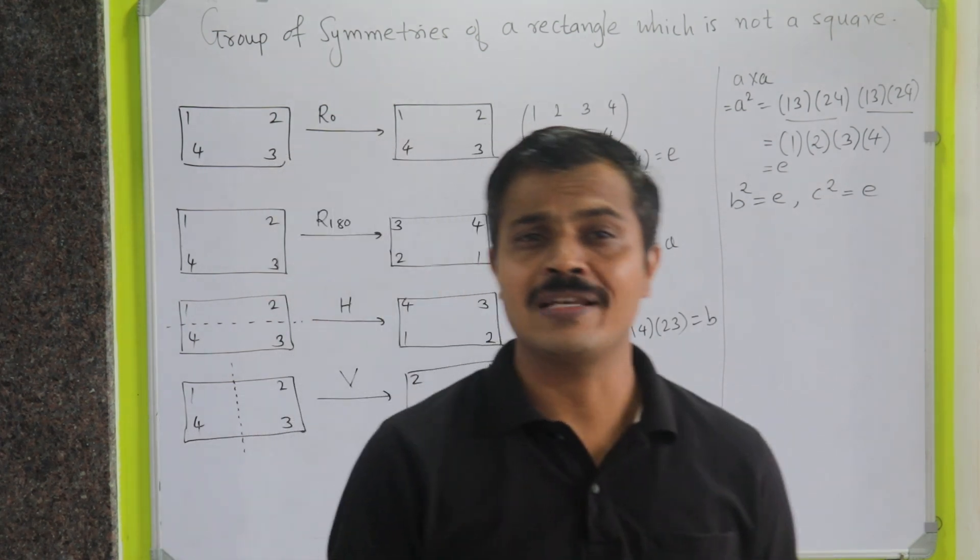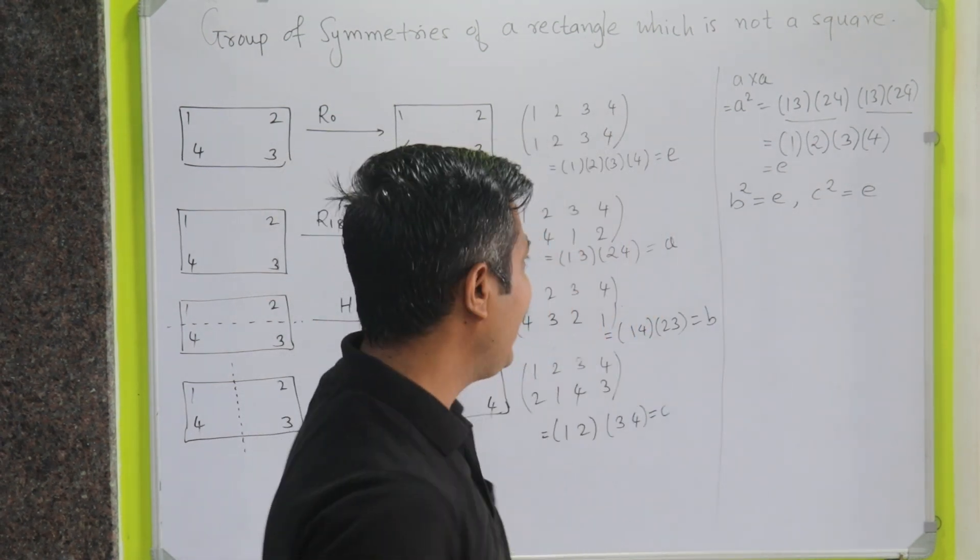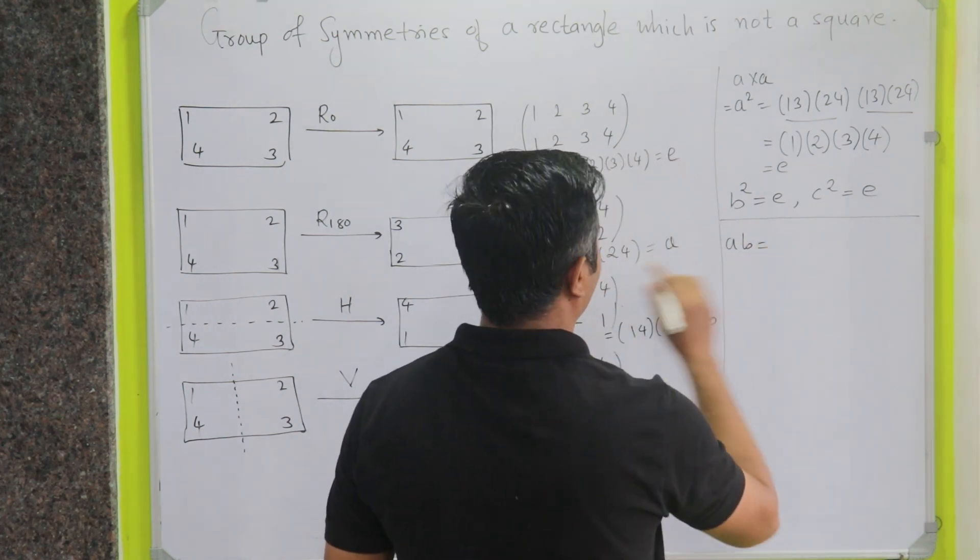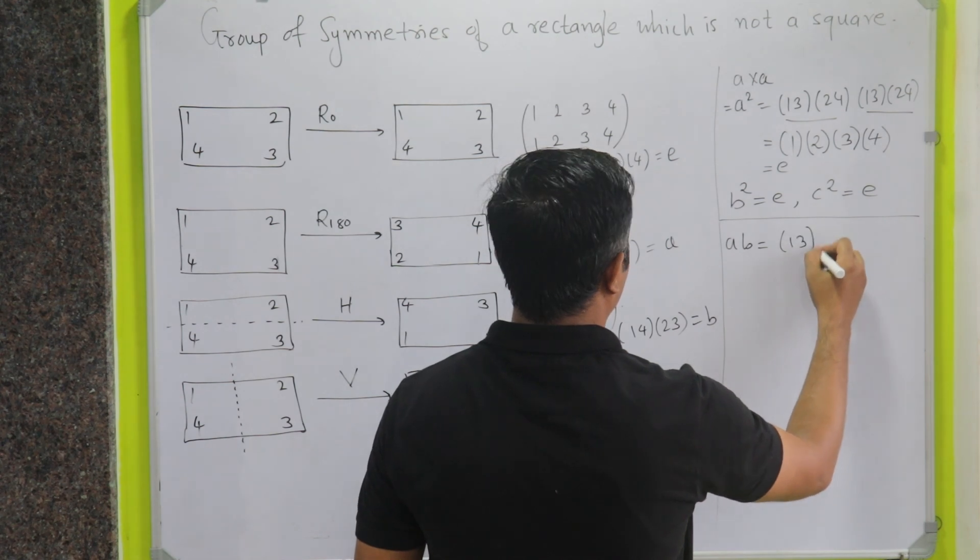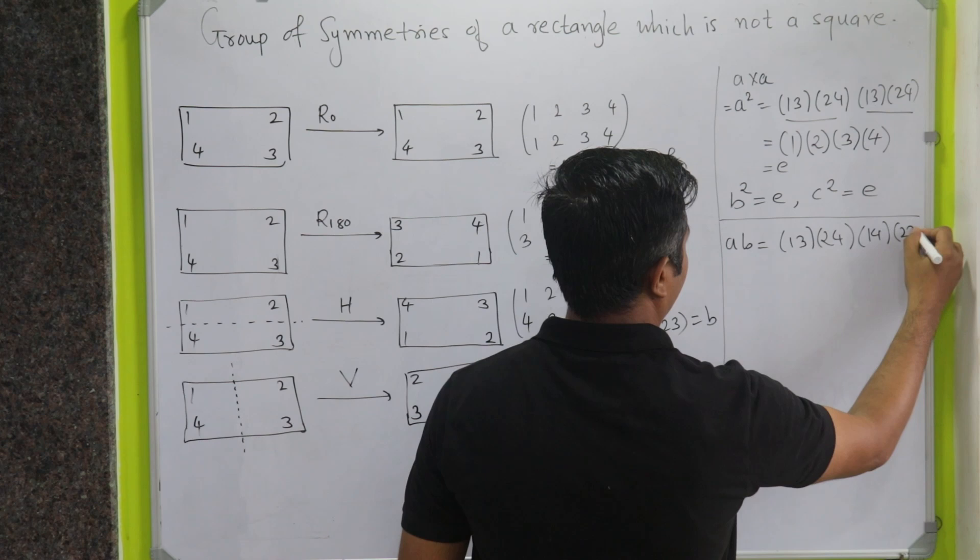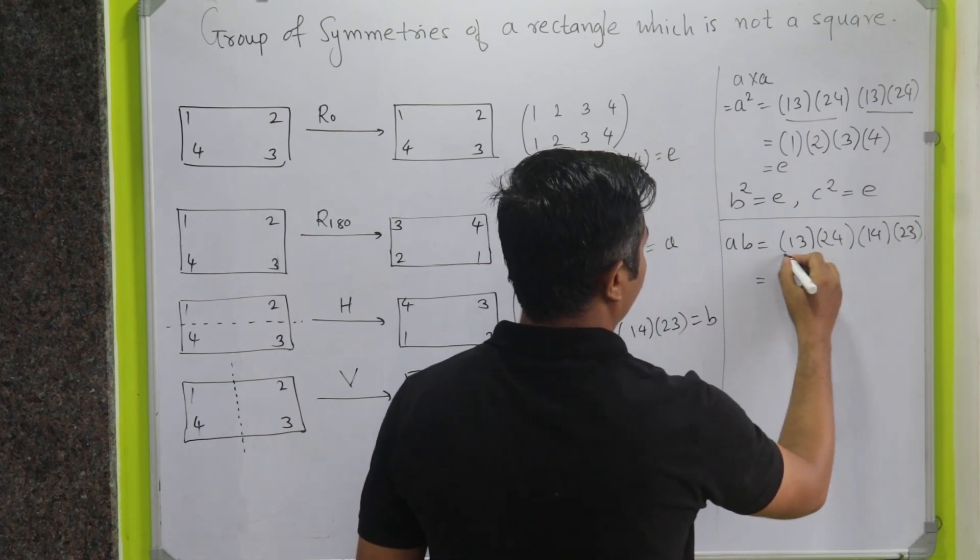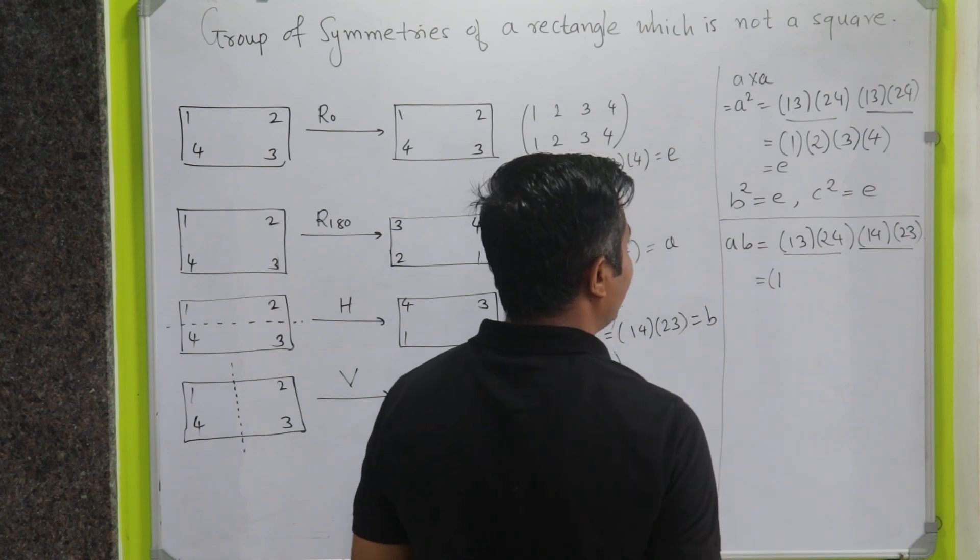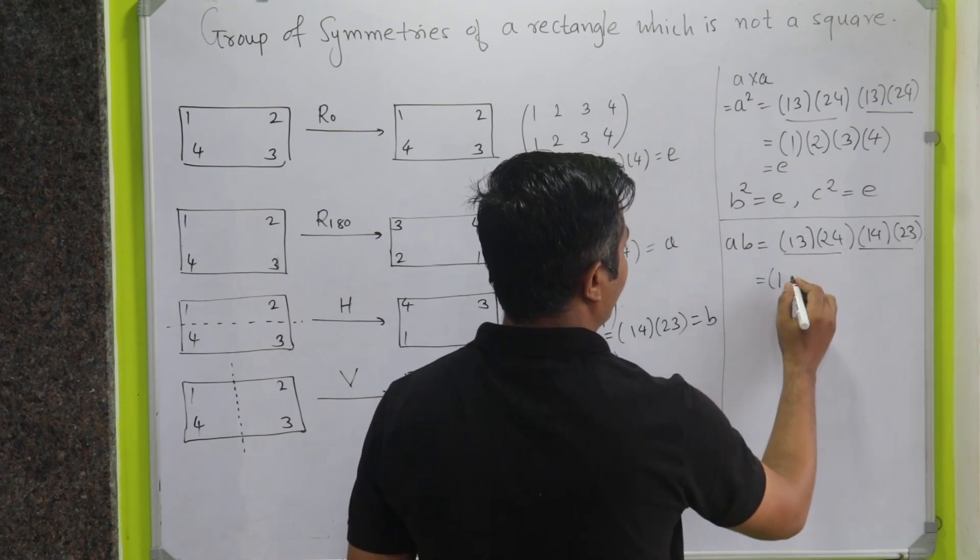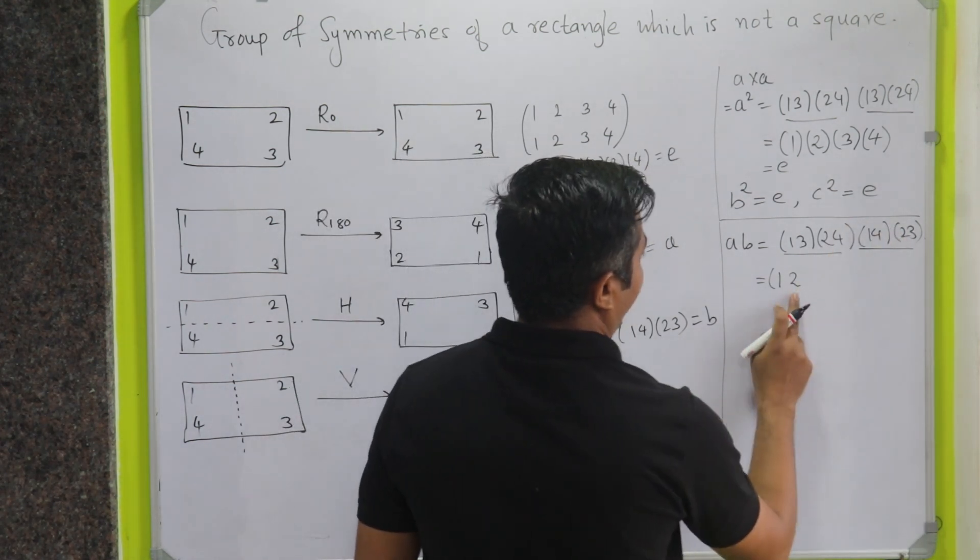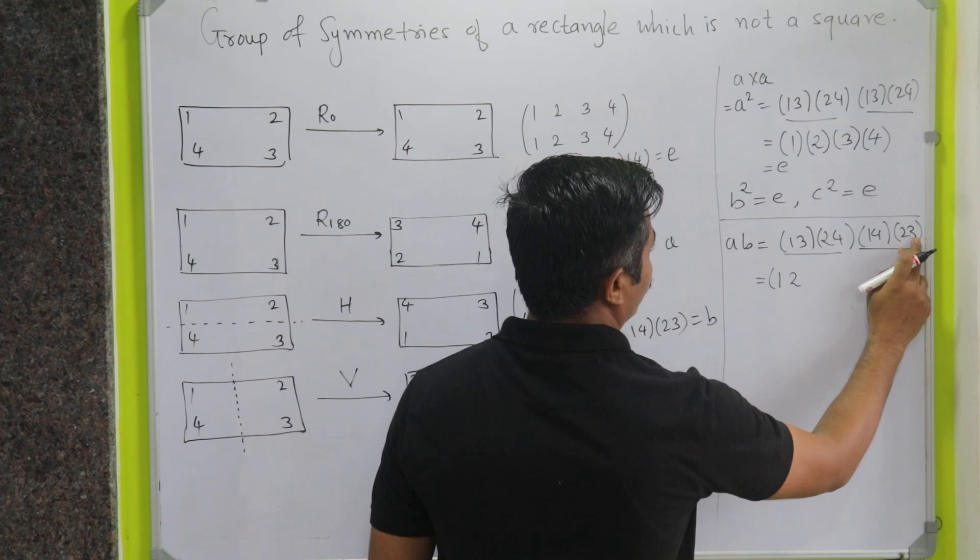Now let us check what is the multiplication of AB. So AB is actually equal to, so this is my A, this is my B, so this is actually equal to, finding the image of 1, 1 maps to 4, 4 maps to 2, so 1 will map to 2. Next, finding the image of 2, 2 maps to 3, 3 maps to 1, so cycle closes.